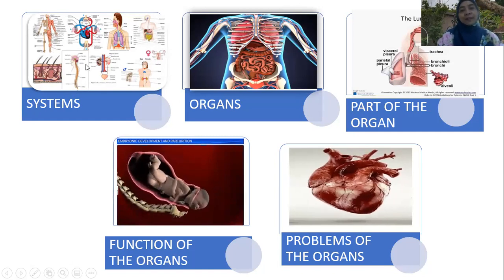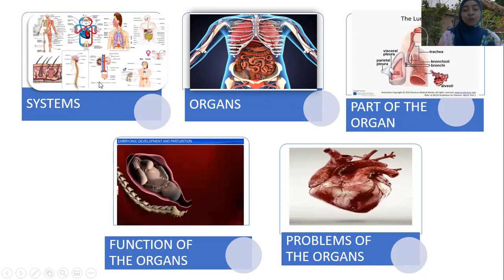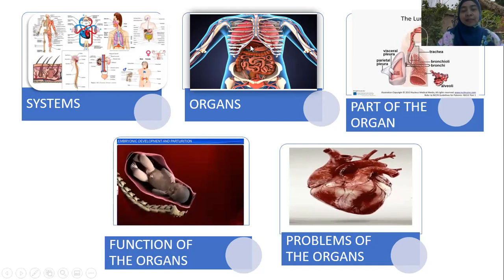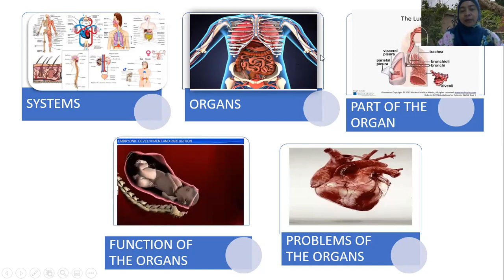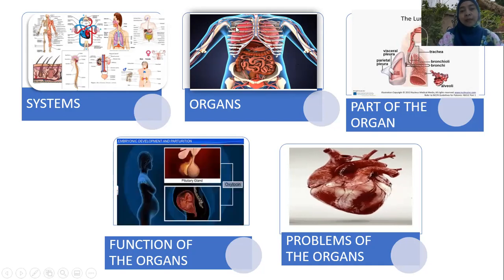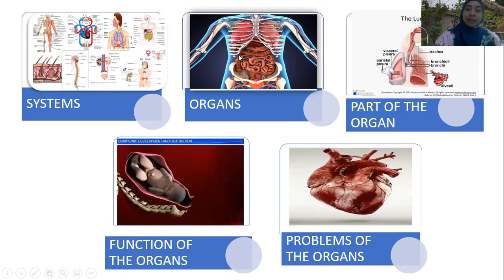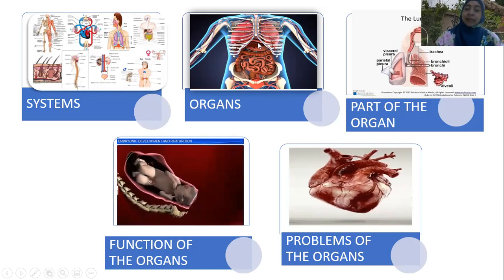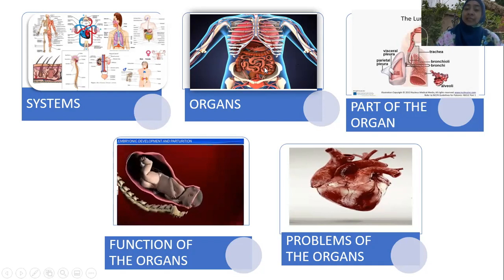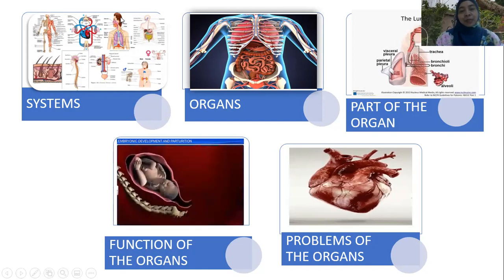Each system is built by organs. For example, the musculoskeletal system is built by the many bones in our body — these bones are organs that build the musculoskeletal system. Similarly, we can see the ileum and gastric build the digestive system.